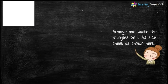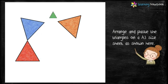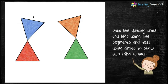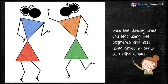Now arrange and paste these triangles on an A3 size sheet as shown here. These triangles form the body of two tribal women. Next, draw their dancing arms and legs using line segments. After that, draw their head using circles. Now students, you would get a complete picture of two dancing women.